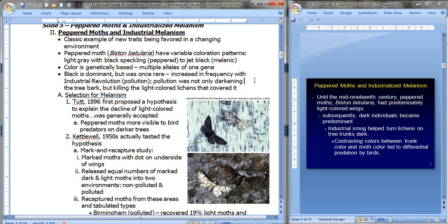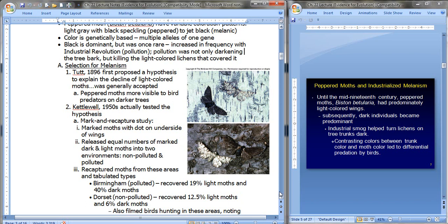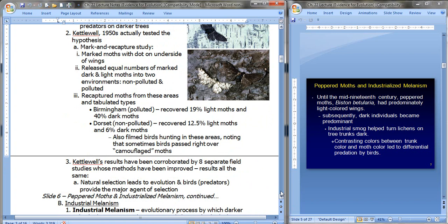In the 1950s, Kettlewell actually tested the hypothesis with a mark and recapture study. What he did was he marked the moths with a dot on the underside of their wings. He released equal numbers of marked dark and light moths into two environments, non-polluted and polluted. The recaptured moths from these areas and tabulated types are as follows. Birmingham, and this is in England, a polluted area. He recovered 19% light moths and 40% dark moths. Obviously he didn't recover everything. And Dorset, the non-polluted or cleaner area. He recovered 12.5% light moths and only 6% dark moths. He also filmed the birds hunting in these areas, noting that sometimes birds passed right over the moths that were camouflaged.